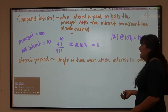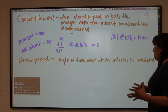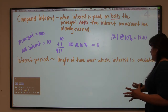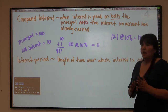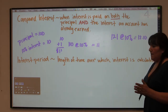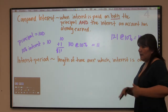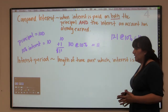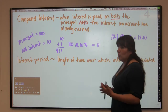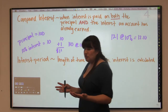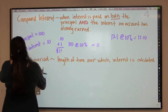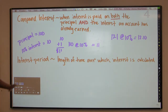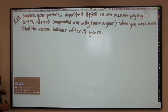An interest period is the length of time over which interest is calculated. You can compound annually — once a year — semi-annually, quarterly, monthly (12 times a year), or even weekly (52 times a year). That's the interest period, and we'll discuss how to apply it as the lesson continues.